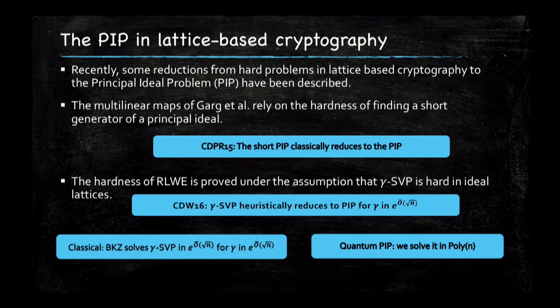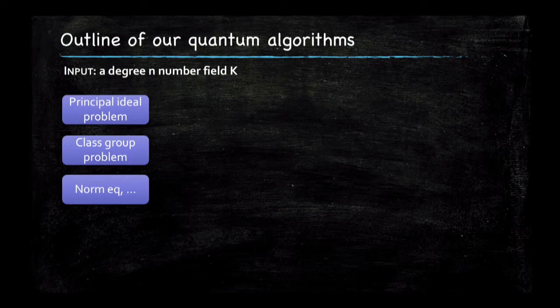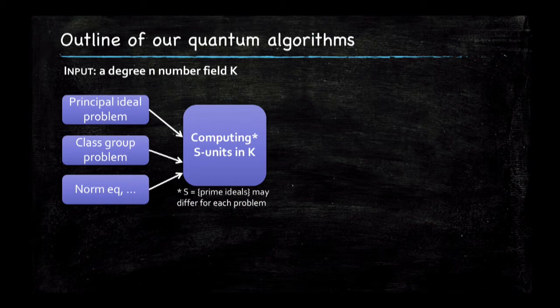Here is the general outline. We have a bunch of problems: principal ideal problem, class group, norm equation, and more. We show that these, for the most part, classically reduce to the problem of finding S-units in your number field. The relative class group also requires an oracle for discrete logs and factorization, so it's not quite classical. But essentially all the techniques reducing these problems to S-units are classical. Then we turn this into an instance of the hidden subgroup problem and use the state-of-the-art from Hallgren and Eisenträger, Hallgren, Kitaev, and Song's paper.